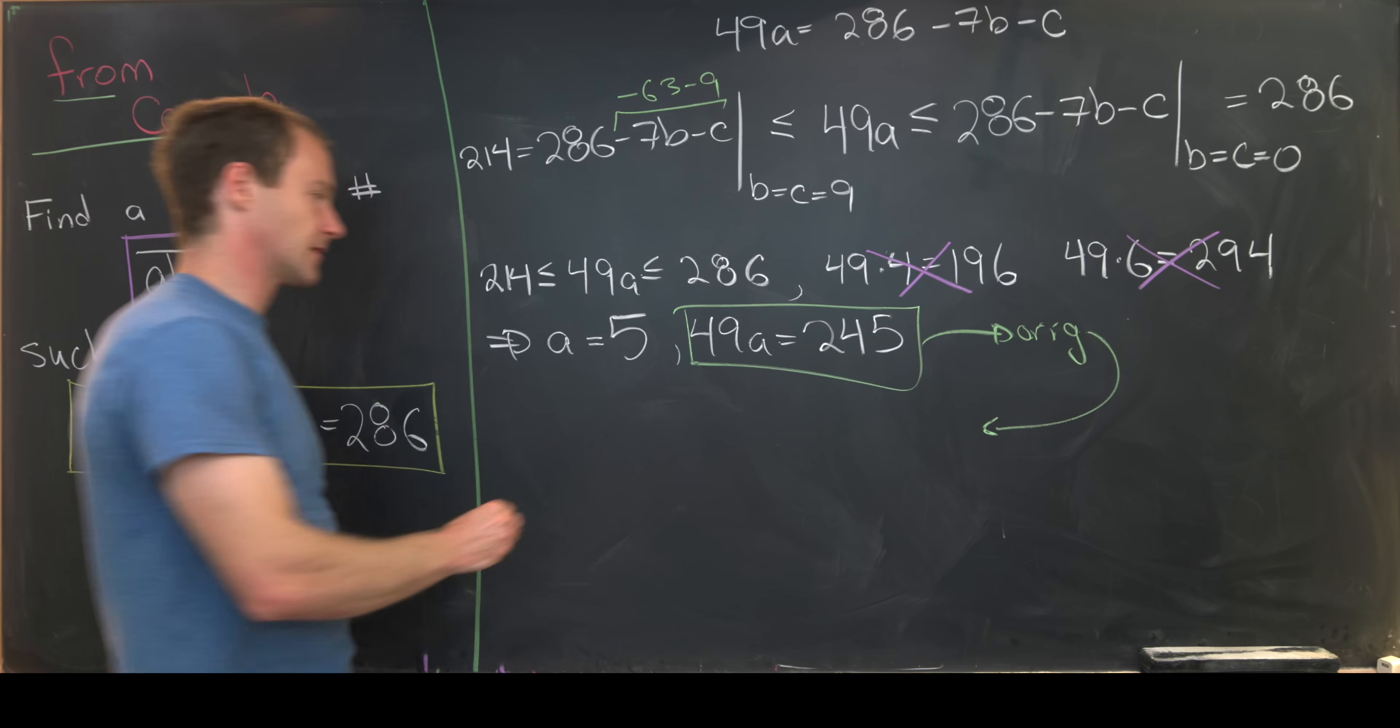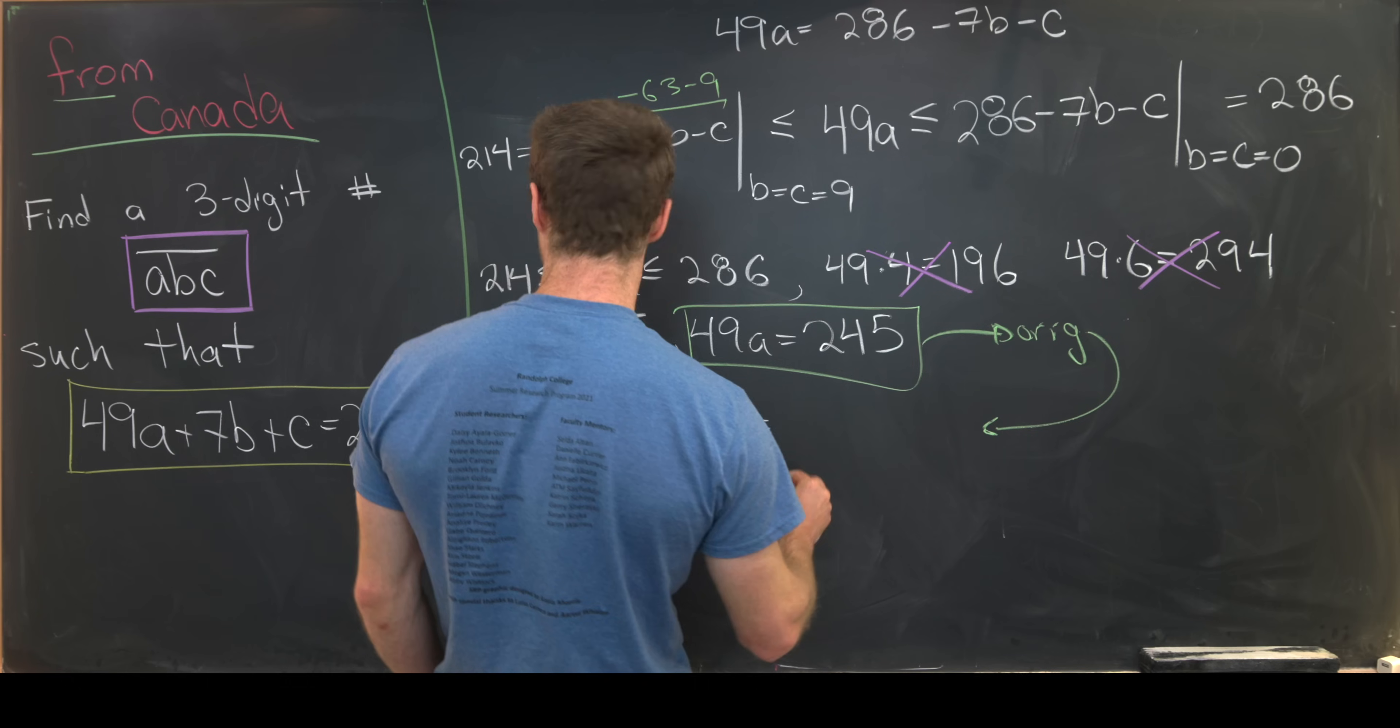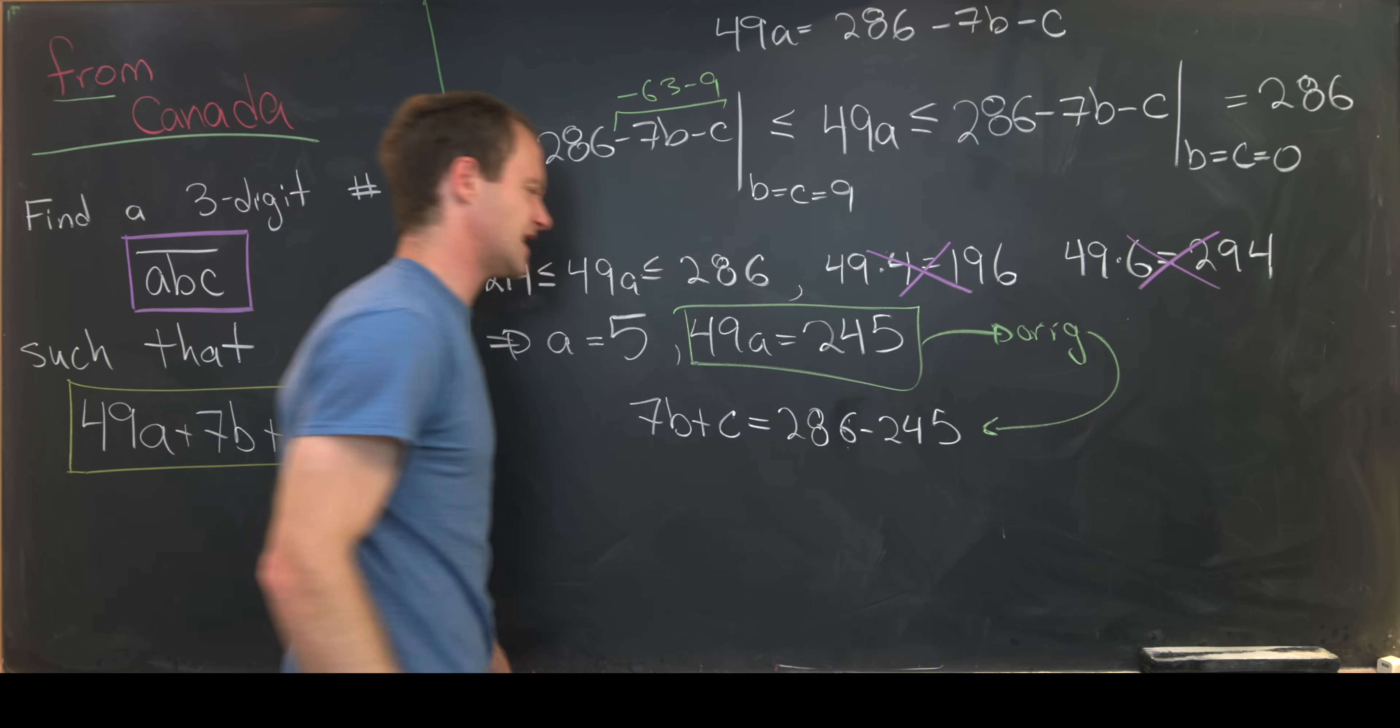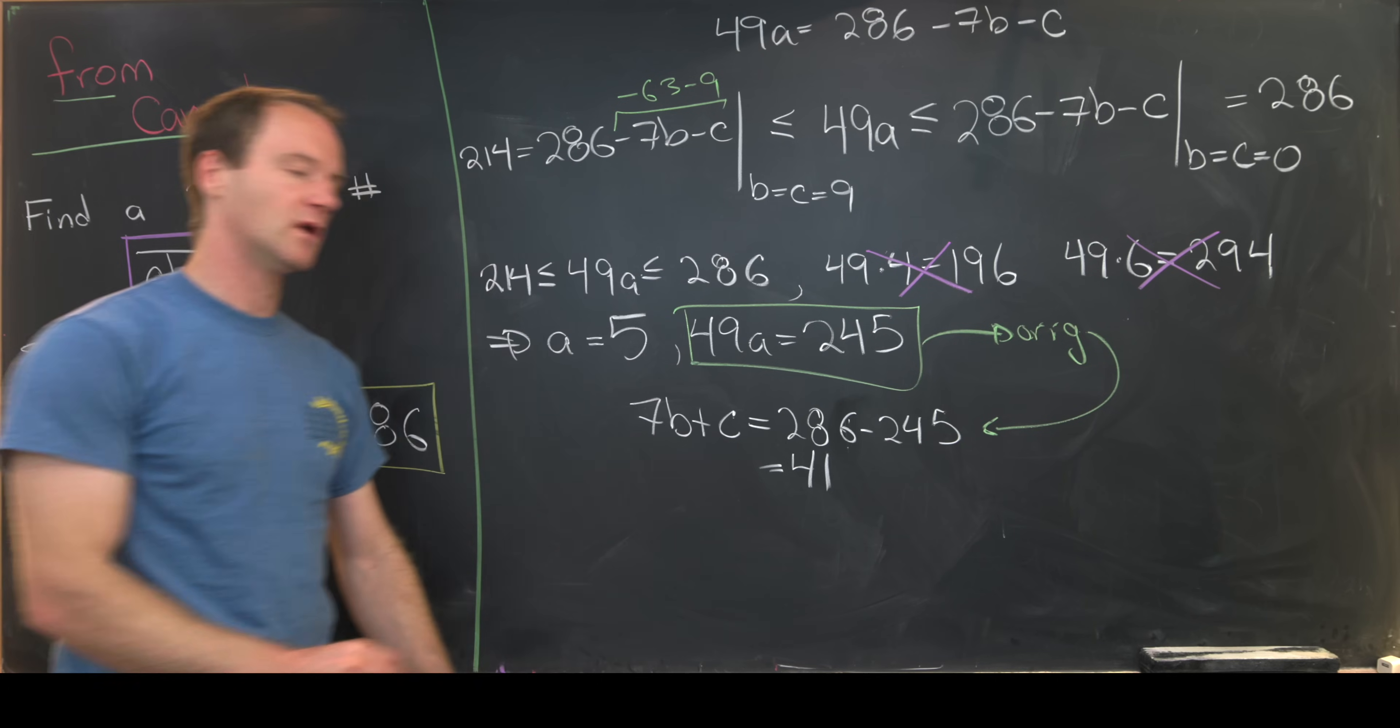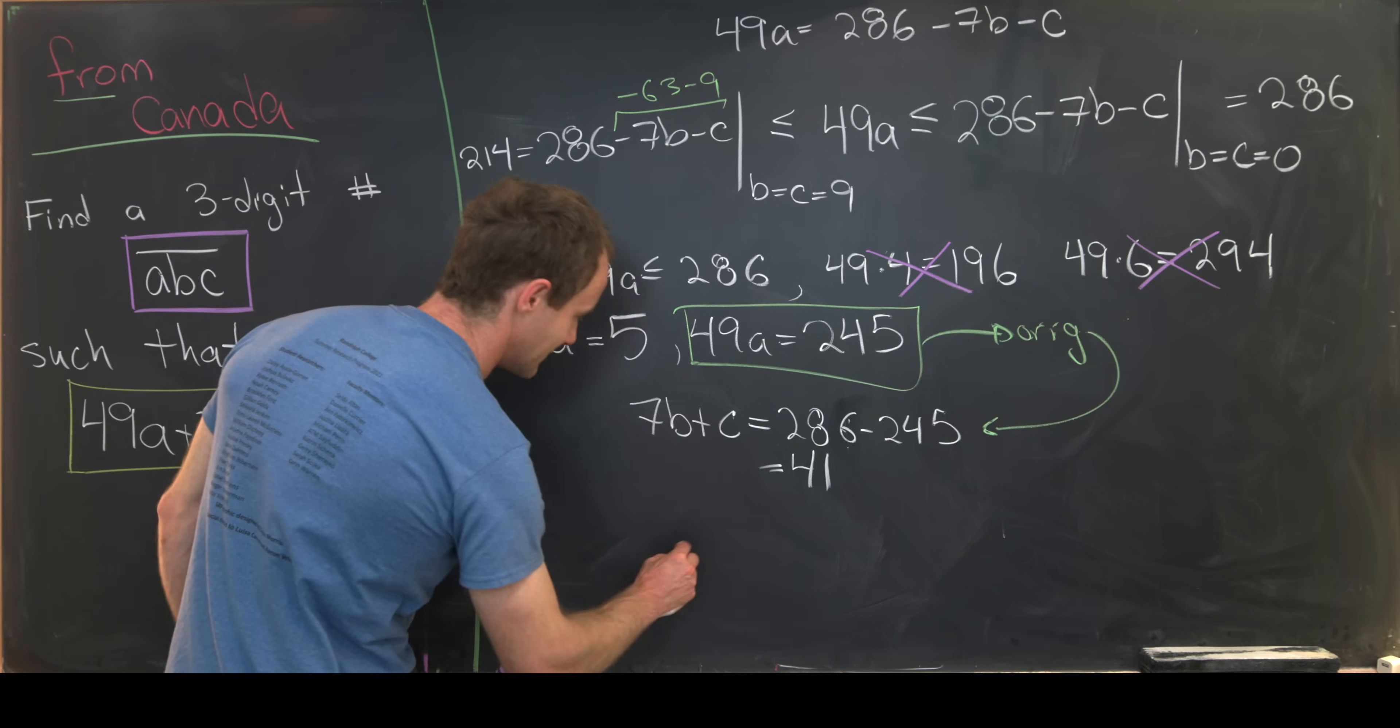So putting that over here, we have 7B plus C is equal to 286 minus 245. And that's just from moving the 245 over or the 49 over. But let's notice that that is equal to 41 just by simple subtraction. Now we can play this same game again.